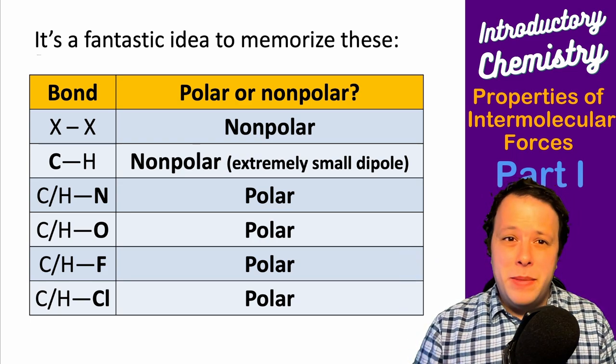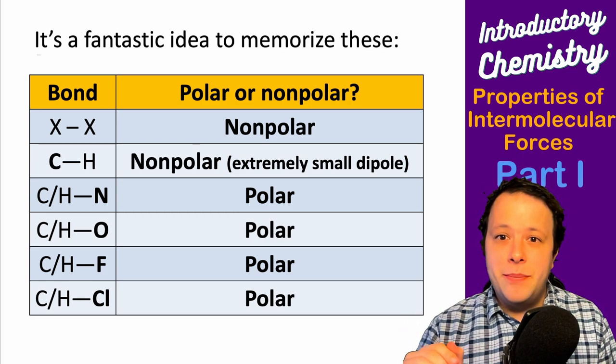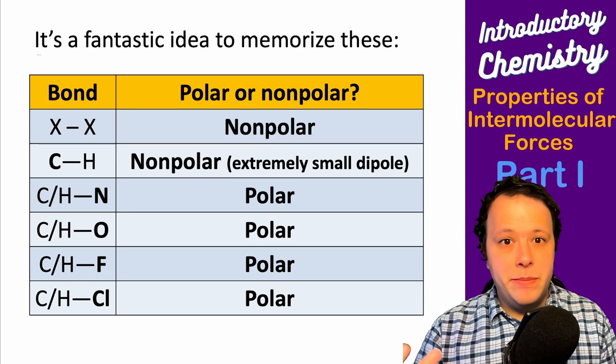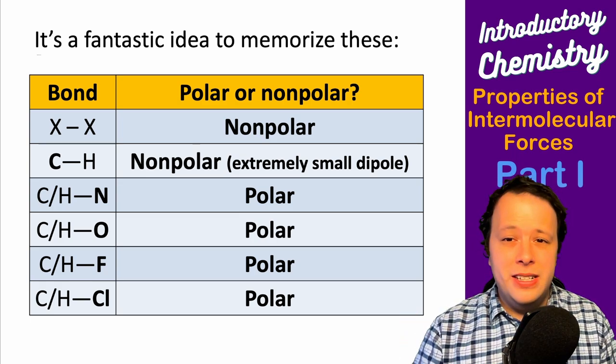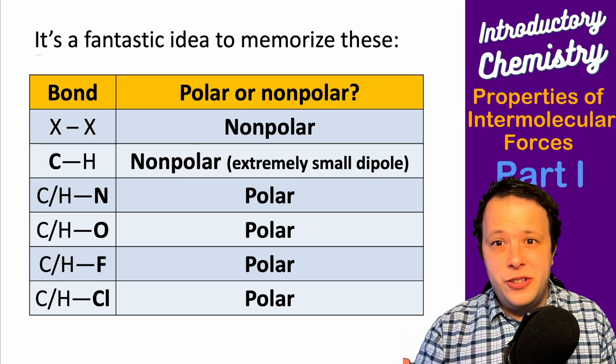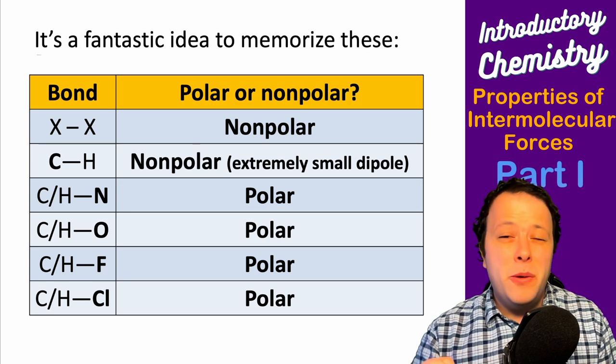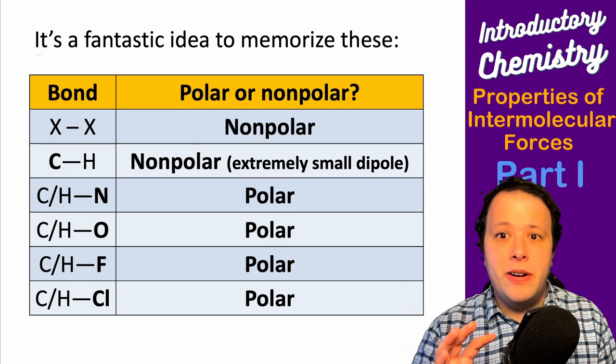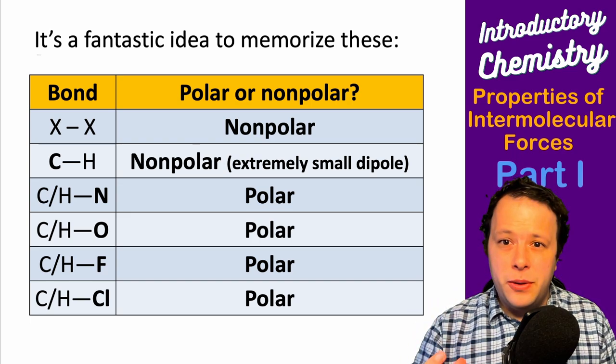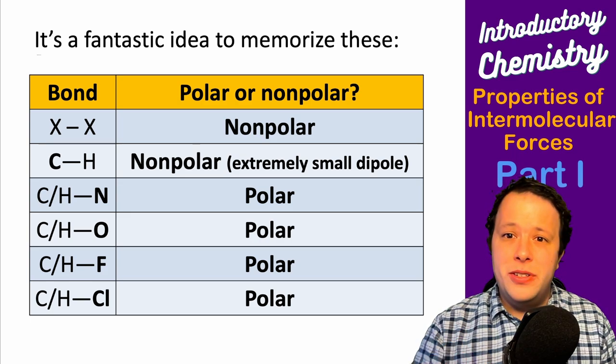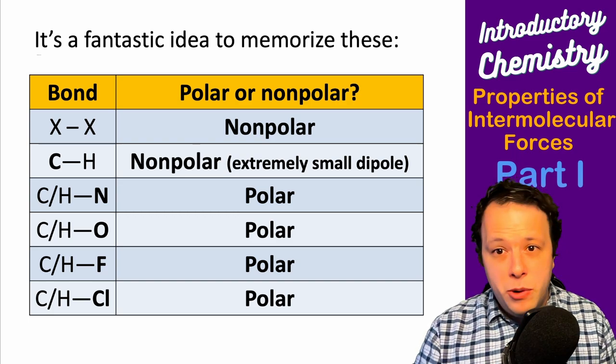I would recommend it's really important to memorize some of these trends. If something is non-polar, typically it's bound to the same element, like your diatomic molecules, or carbon to hydrogen bonds. In organic chemistry, when we see C-C or C-H, these are non-polar. When we're looking for polar interactions, we look for elements in the top right of the periodic table.